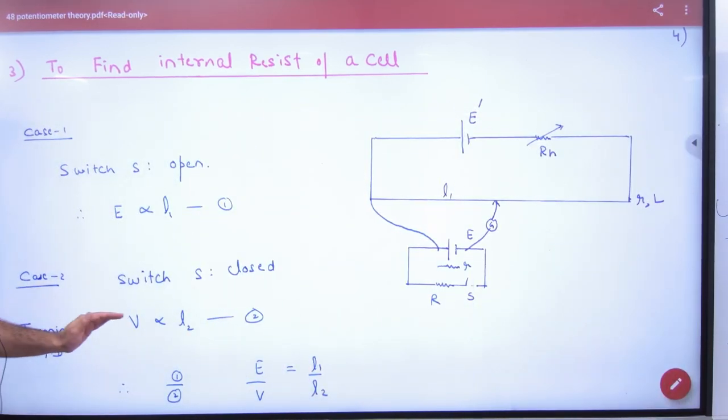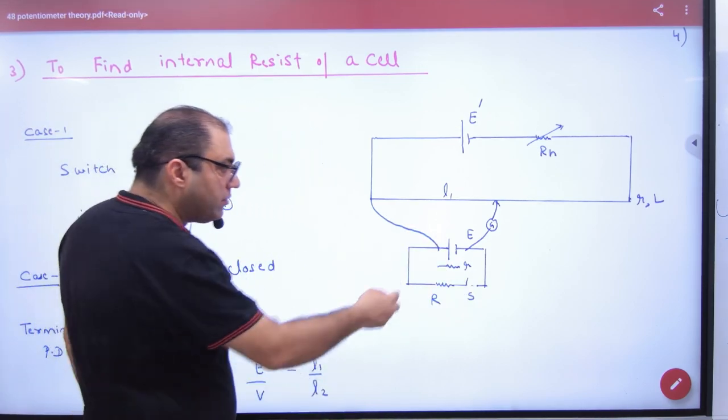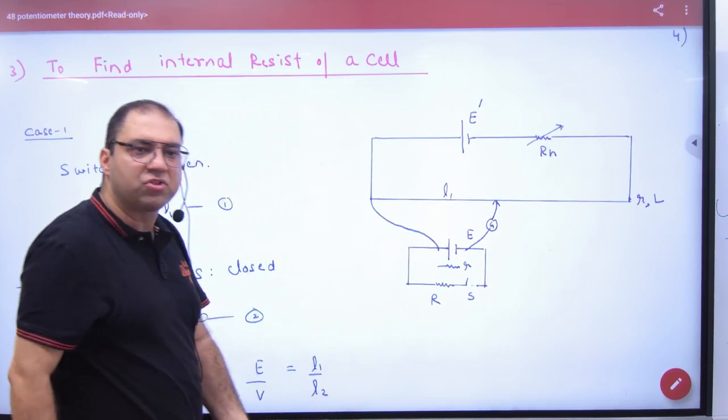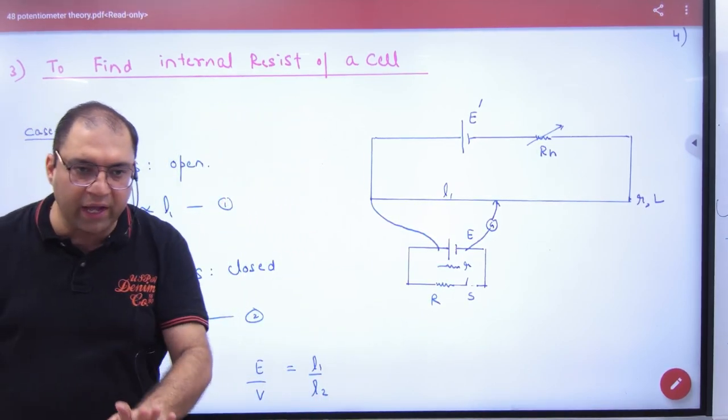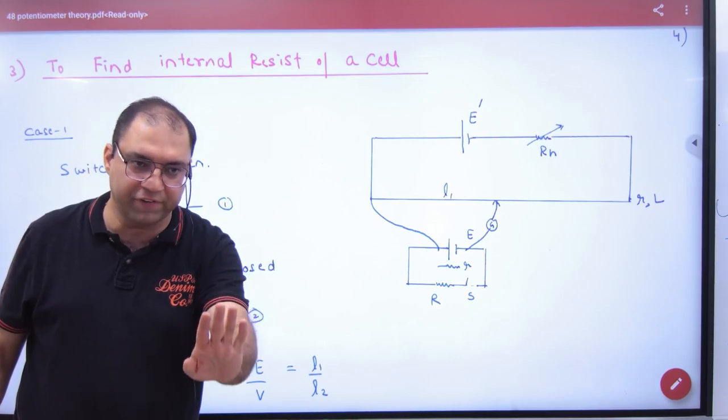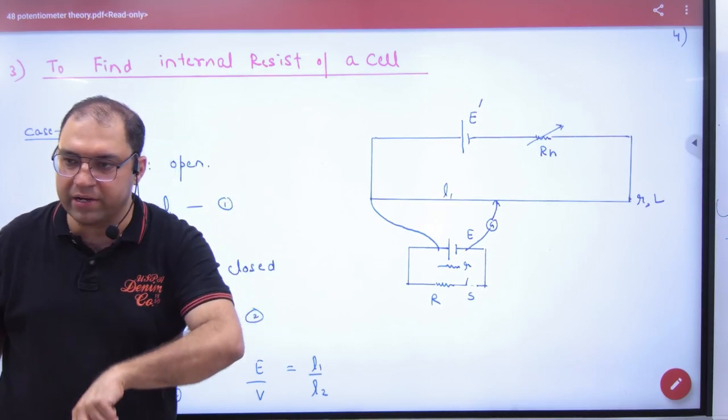In case number 2, when you have closed your switch, this battery has started running current. So the potential difference at the battery's terminals will never be E. E will never come. How much will come? V. Terminal potential difference. Because when the battery is throwing out current, E will not come.